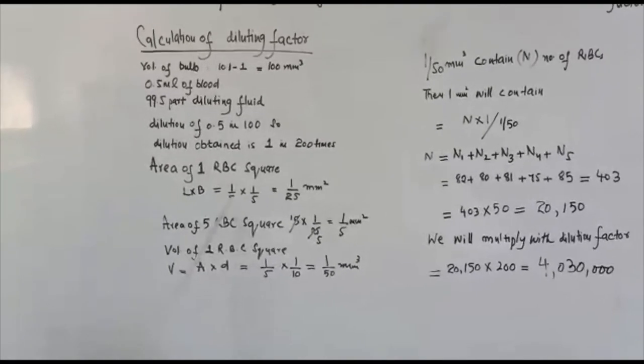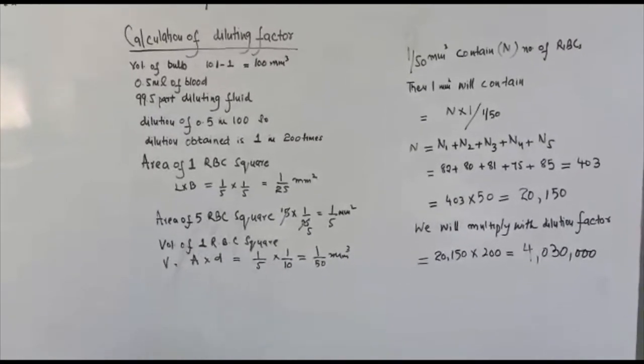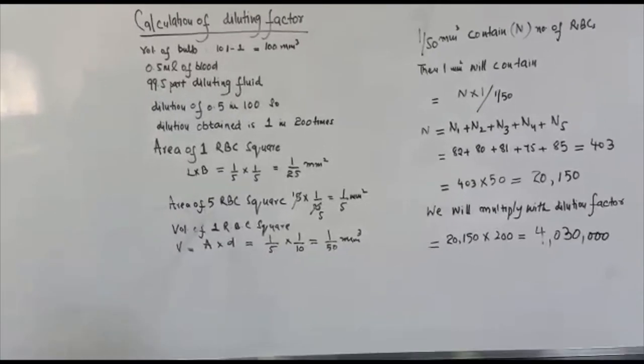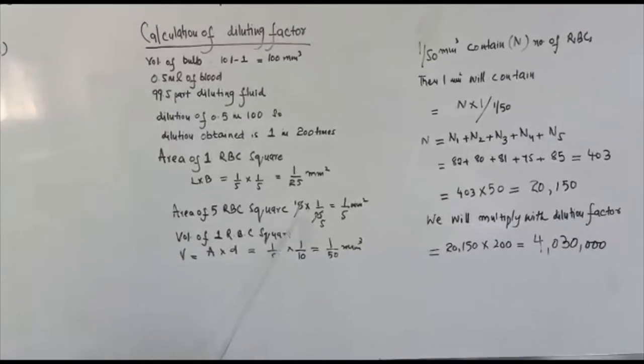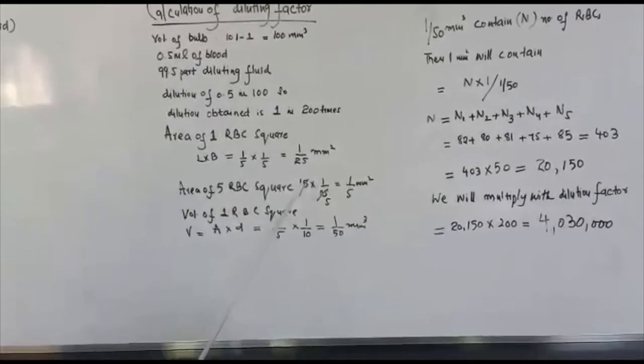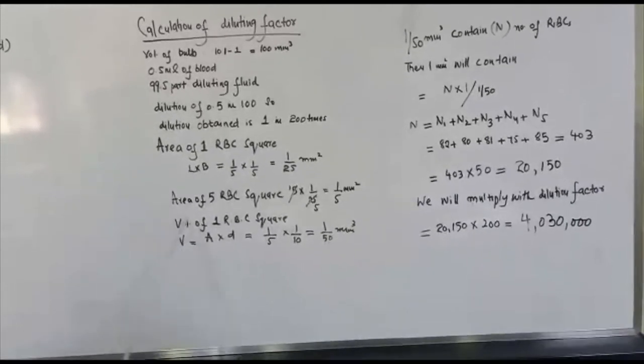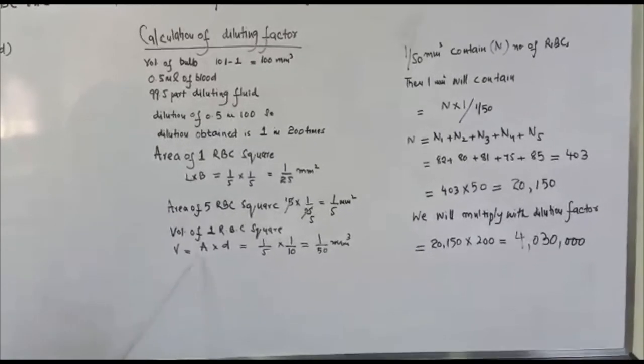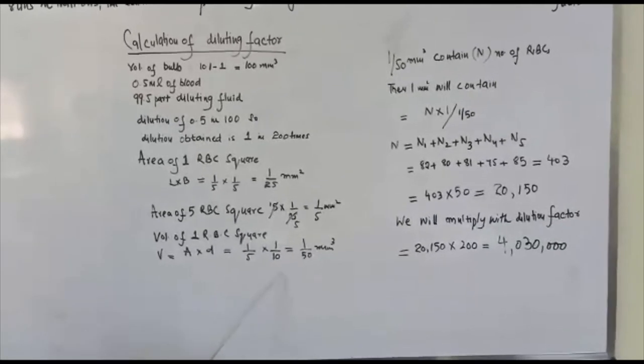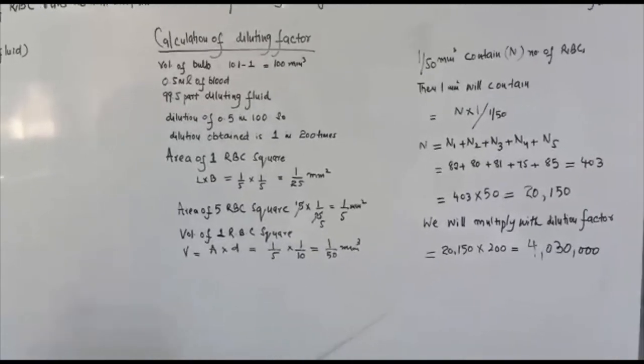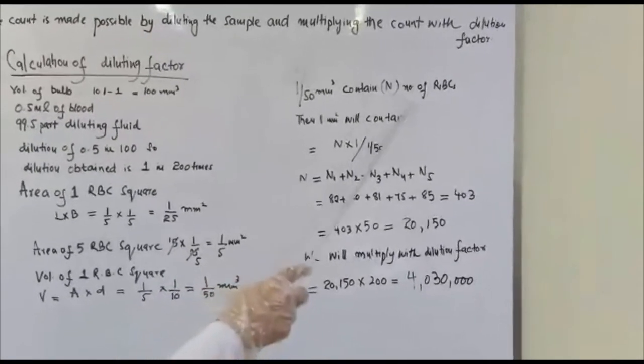Area of 1 RBC square: length times breadth equals 1/5 times 1/5 equals 1/25 millimeter square. Area of 5 RBC squares in the central big square is 5 times 1/25 equals 1/5 millimeter square. Volume of 1 RBC square is area times depth: 1/5 times 1/10, the standard depth of Neubauer chamber, equals 1/50 cubic millimeter.